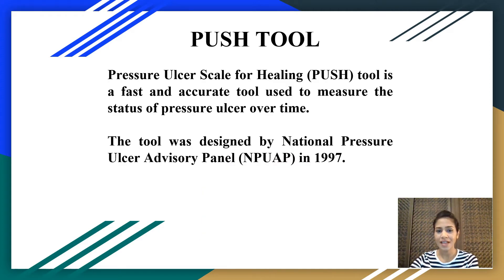The PUSH tool — Pressure Ulcer Scale for Healing — is a fast and accurate tool used to measure the status of pressure ulcer over time. The tool was designed by the National Pressure Ulcer Advisory Panel, that is NPUAP, in the year 1997. So this tool is mainly to assess the healing status of the pressure ulcer.